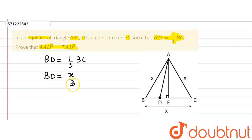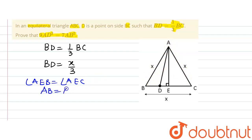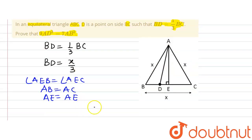So we can write BD is equal to one-third of X. Now if we observe triangle AEB and triangle AEC, we find that angle AEB is equal to angle AEC because both of them are 90 degrees. Also, side AB is equal to AC because the sides of an equilateral triangle are equal, and side AE is common in both triangles.